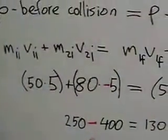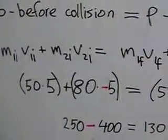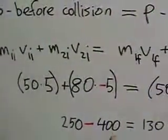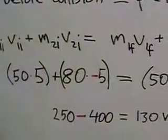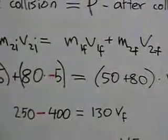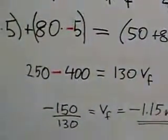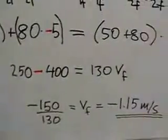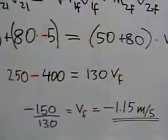So then you do the calculations and you can see here that you get 250 plus negative 400. And of course, 400 is greater than 250, so that's where the negative value will be coming from. Here we have 130 times the velocity final. And so then we get a negative value for the final velocity of negative 1.15 meters per second or negative 1.2 meters per second.